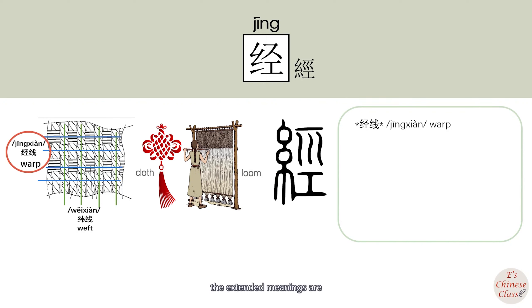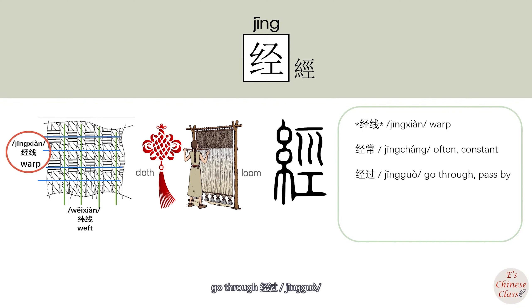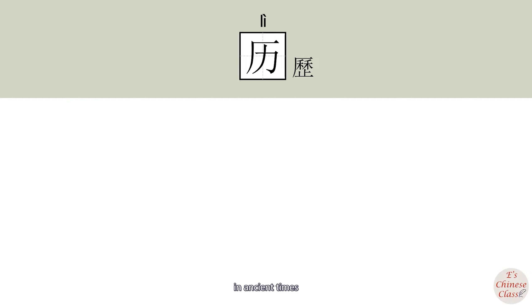The exact meanings of 经 are: constant, and go through. 经过 — in ancient times...